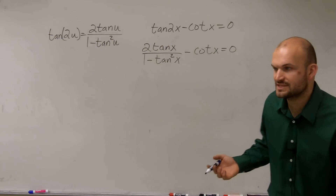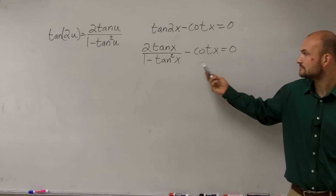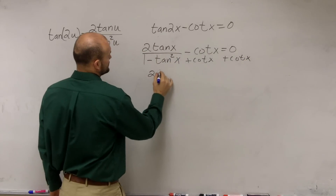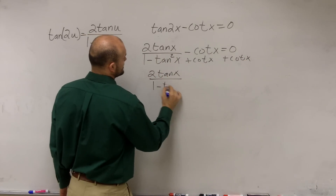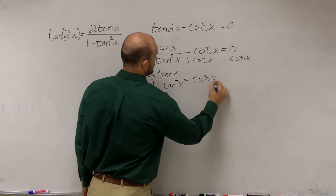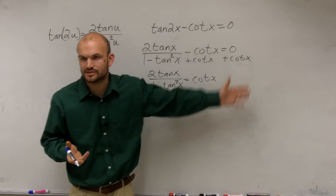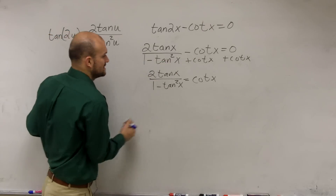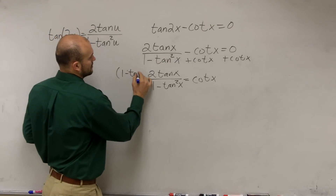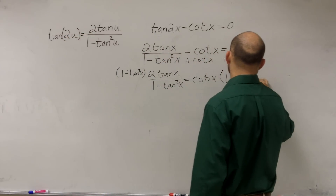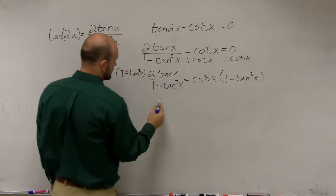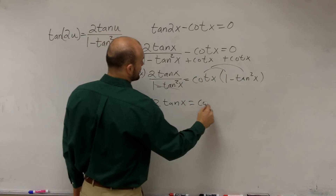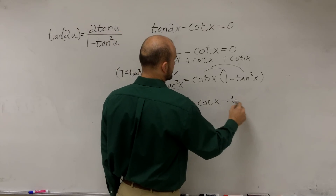Now let's do some math to get it somewhere where I can solve for x. Let's add the cotangent to the other side. So I have 2 tangent of x divided by 1 minus tan squared of x equals cotangent of x. The reason I wanted to move it is I want to get the 1 minus tangent squared off to the other side, off the denominator, so I'll multiply both sides by that.